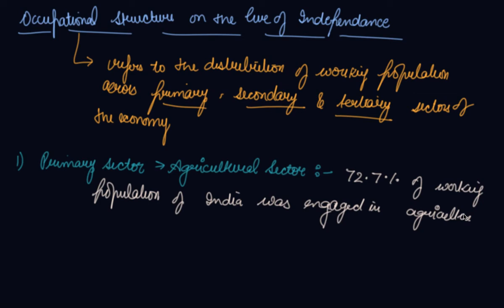This established the backwardness of the Indian economy at the time of independence. The second is the secondary sector, also called the industrial sector. On the Eve of Independence, barely 9% of the working population was engaged in manufacturing industries, mining industries, etc.